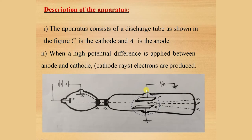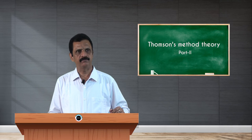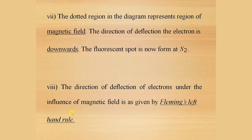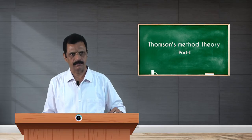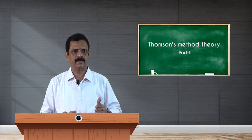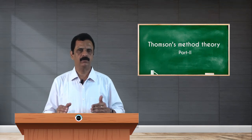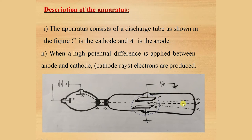The dotted region in the diagram indicates where the magnetic field exists. Because of the presence of the magnetic field, the direction of deflection of the electron is downwards, and the fluorescence spot is now formed at S2. The direction of deflection of electrons under the influence of the magnetic field is given by Fleming's left hand rule. To summarize: when there is no electric or magnetic field, the beam reaches spot S; when the electric field is applied, the spot is formed at S1; and when the magnetic field is applied, the spot is formed at S2.